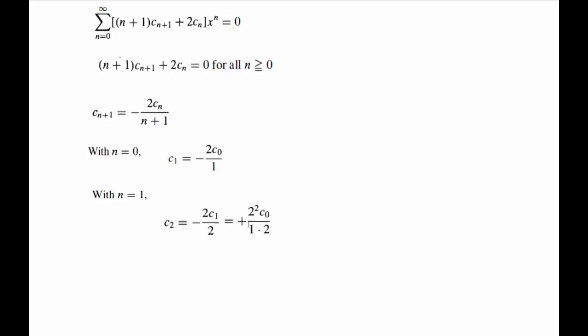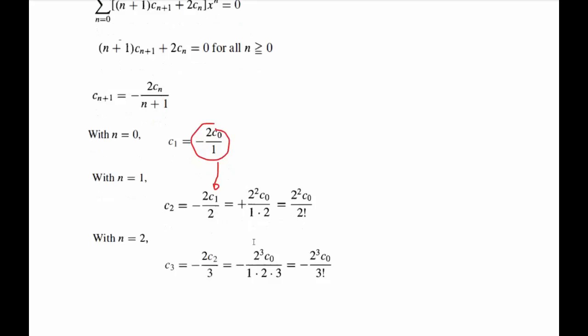That will give us plus, because this is already negative here, so minus minus is plus, 2 squared. So what we've actually done here is we've taken this c₁ and substituted it in here. So that's why the minus and the minus gives you plus, and then you get 2² c₀ over 1 times 2. My advice to you is do not write this as 4 or this as 2. Whatever product is being taken, you should write it as you see it, because it will help you determine the pattern.